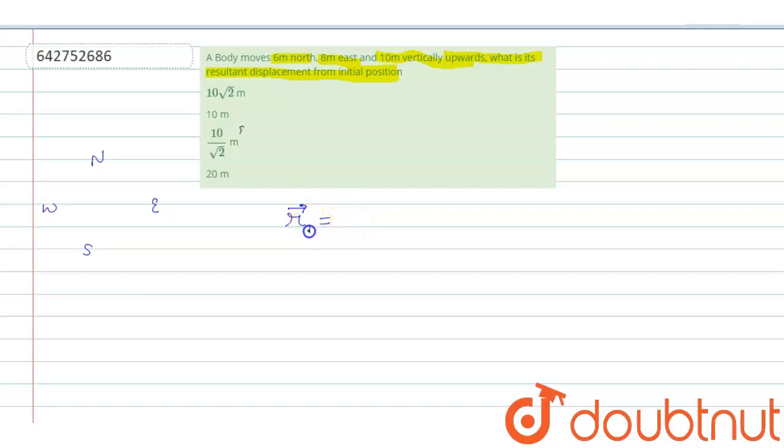R1 is 8 meter east that is I cap and R2 is 6 meter north that is along J cap and R3 is 10 meter vertically upward that is K cap.